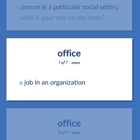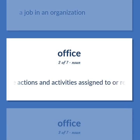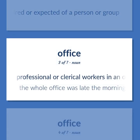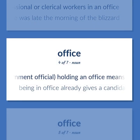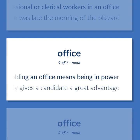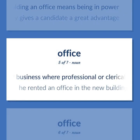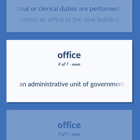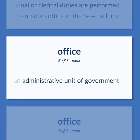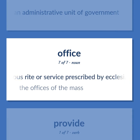Role: a job in an organization. The actions and activities assigned to or required or expected of a person or group. Office: professional or clerical workers in an office. Example: The whole office was late the morning of the blizzard. Of a government or government official, holding an office means being in power. Example: Being in office already gives a candidate a great advantage. Place of business where professional or clerical duties are performed. Example: He rented an office in the new building. An administrative unit of government. A religious rite or service prescribed by ecclesiastical authorities. Example: The offices of the mass.